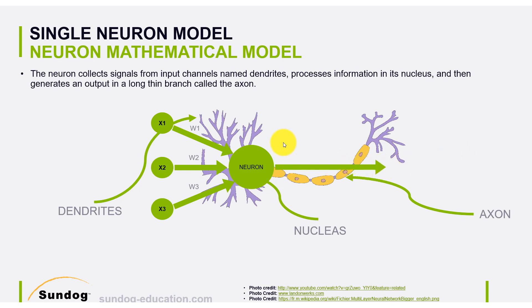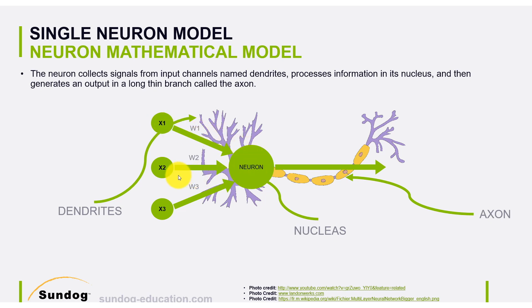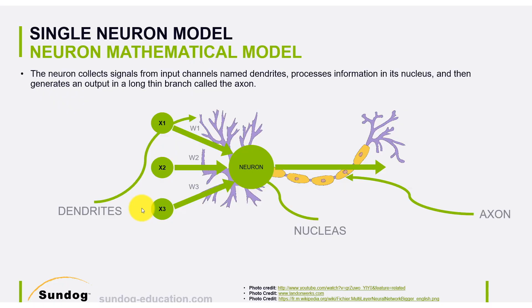When we do that mathematically, we assume we have all these inputs — the dendrites — which we can call x1, x2, x3. Here we have a neuron, and the values connecting each input to the neuron are what we call weights. These are simply numbers. You can set a weight to zero, which means any input multiplied by zero sends nothing to the nucleus. For x2 we might multiply by a weight of one, passing it through unchanged. You can also increase the strength by setting, say, w3 to 10, meaning whatever input arrives at x3 gets multiplied by 10. That's how you change the importance of different inputs or neurons in the previous layer.